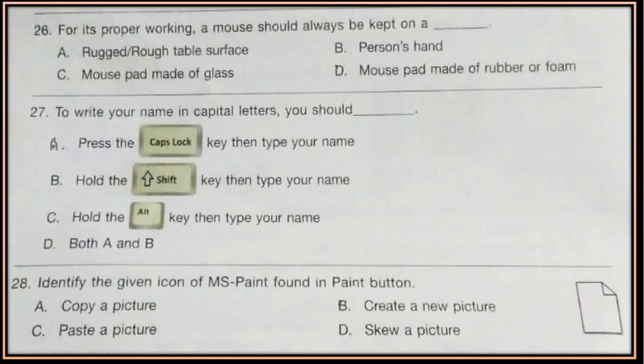Question 26. For its proper working, a mouse should always be kept on a dash — rugged or rough table surface, a person's hand, mouse pad made of glass, or mouse pad made of rubber or foam.